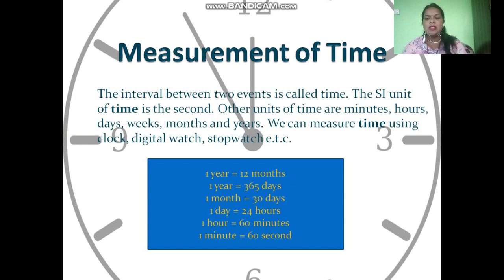Measurement of time — the interval between two events is called time. The SI unit of time is second. Other units of time include minutes, hours, days, weeks, months, and years. We can measure time by using a clock, digital watch, or stopwatch. Thank you.